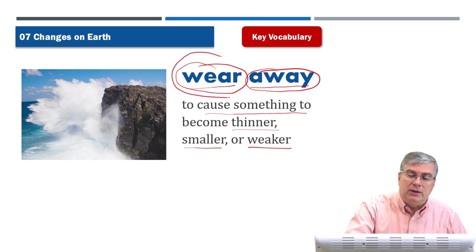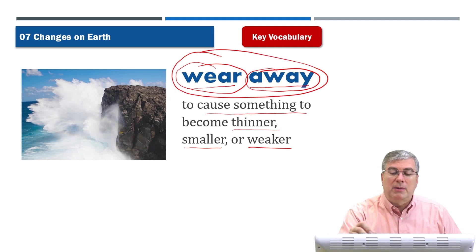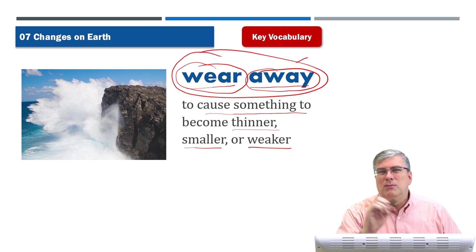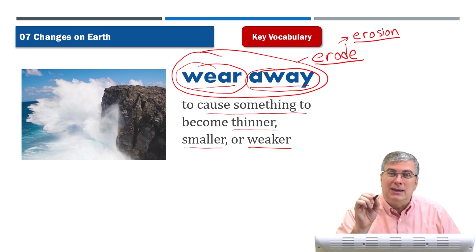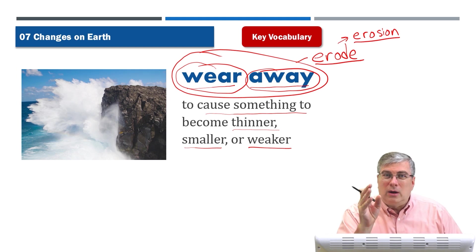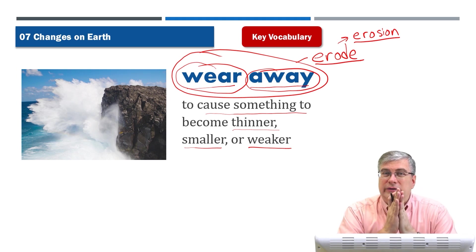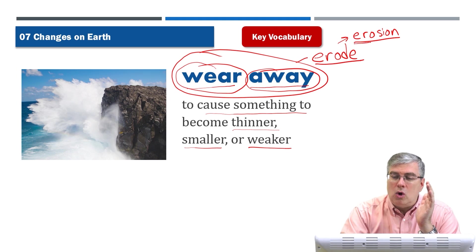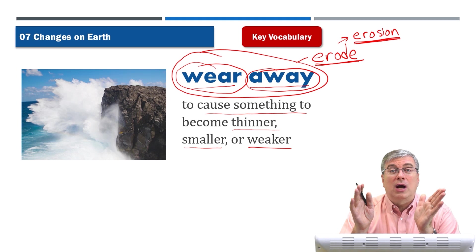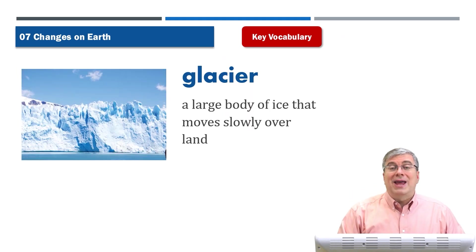Most phrasal verbs in English have a more formal word that corresponds to them. For 'wear away,' the more scientific word is 'erode.' From the verb 'erode' we get the noun 'erosion.' When we talk about wind, water, and other forces acting on rocks — making them smaller, weaker, or the rock layer thinner over time — that process is called erosion. We can say the rocks erode, meaning they wear away.